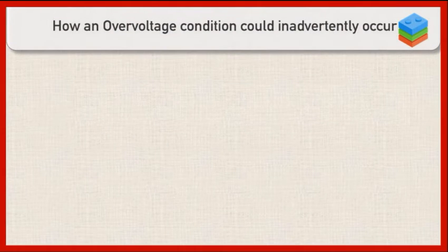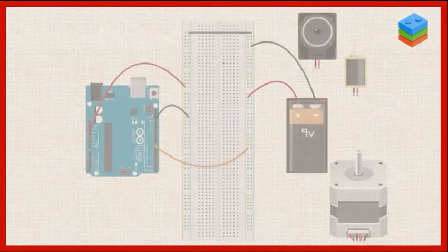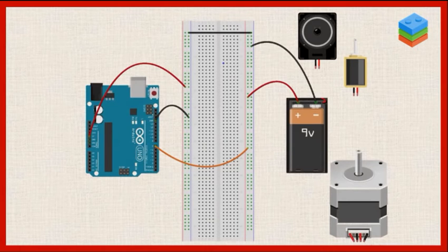If you're working with some components that you're powering with a separate power source, let's say you're using like a 9-volt battery to power something else. If you allow that 9 volts to be applied to one of the I.O. pins, then you can damage that pin, and the actual damage is going to depend on how the fail occurs.